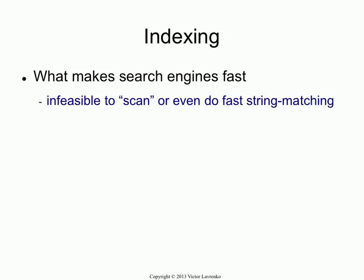Indexing is what makes search engines fast. If you think about the scale on which Google operates, it should be evident that you can't do simple things. If you have 20 billion pages in your index, you cannot afford to take a query and compare each document one by one to the query, because this is not going to scale when you have millions of queries being matched against billions of documents.